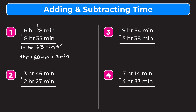We change the 60 minutes into 1 hour, so this becomes 14 hours plus 1 hour plus 3 minutes. Combining 14 hours and 1 hour gives us 15 hours, with 3 minutes left over. Our final answer is 15 hours and 3 minutes.